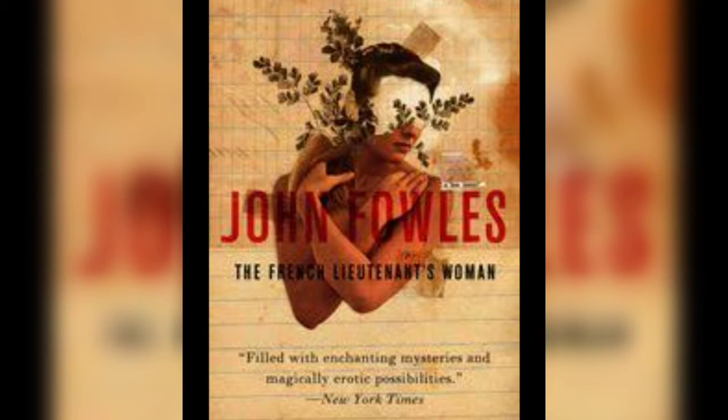Now coming to the characters of this novel. We have Sarah Woodruff, also known as the French lieutenant's woman. The second character is Charles Smithson, who is a baronet, an orphan dependent on his uncle Sir Robert, and also an amateur paleontologist — a naturalist and a man of science. Another character is Charles's fiancée Ernestina Freeman, who is the daughter of a wealthy tradesman. We also have Mrs. Tompkins, a widow whom Sir Robert marries, who has a child from another man.